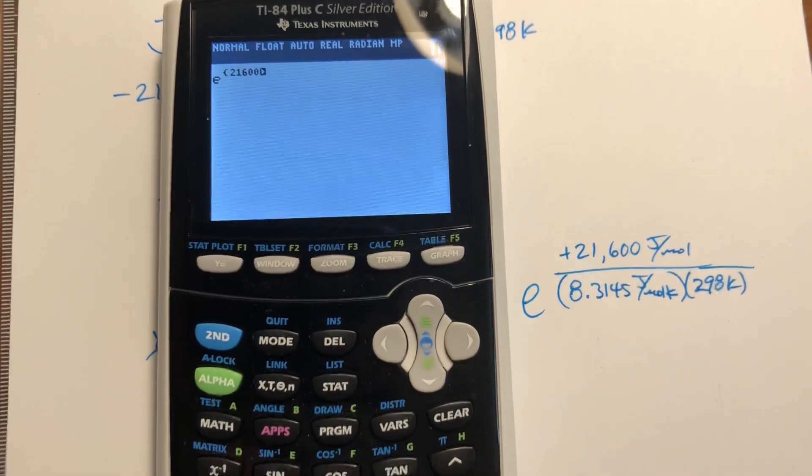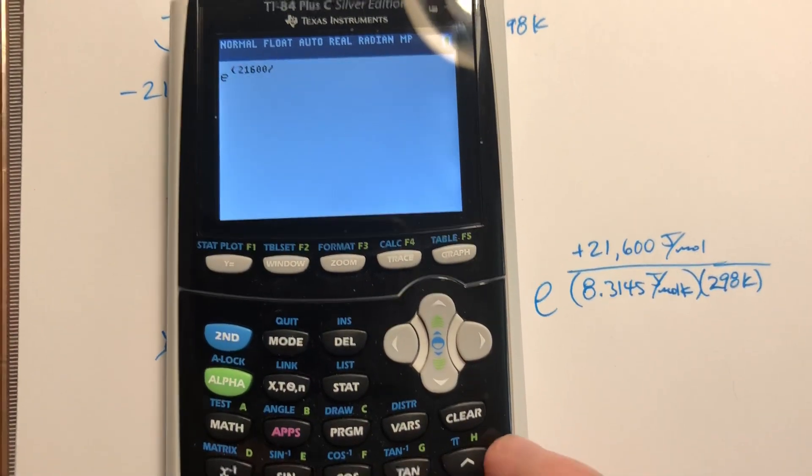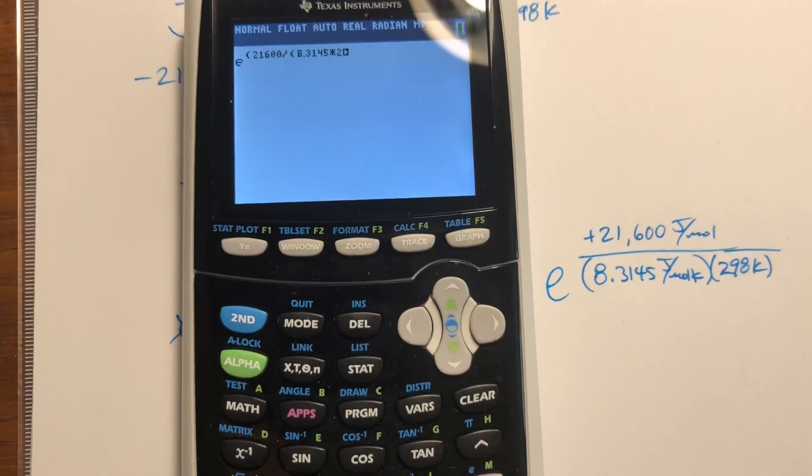So, 21,600 divided by another set of parentheses, 8.3145 times 298.